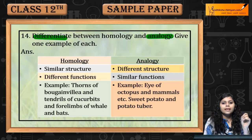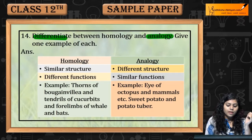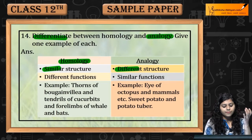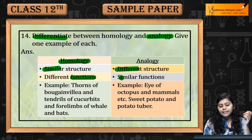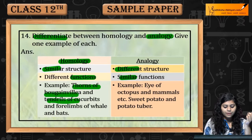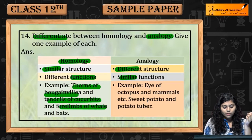Homology and analogy differences: Homologous structures are similar structures with different functions, whereas analogous structures are different structures with similar functions. Examples of homology are thorns of Bougainvillea and tendrils of Cucurbita, and forelimbs of whales and bats.